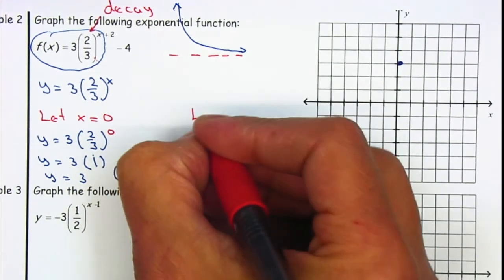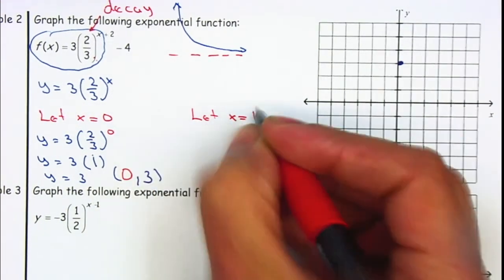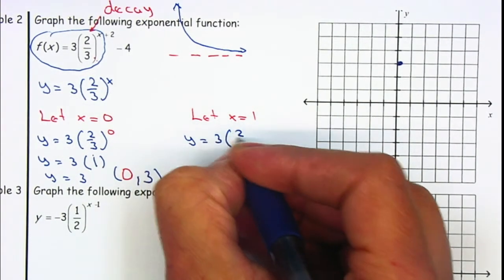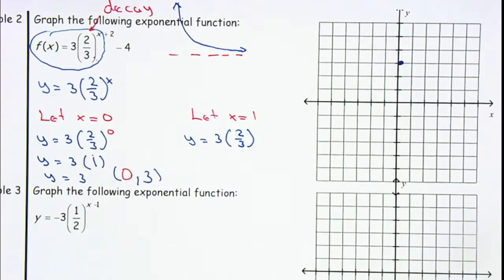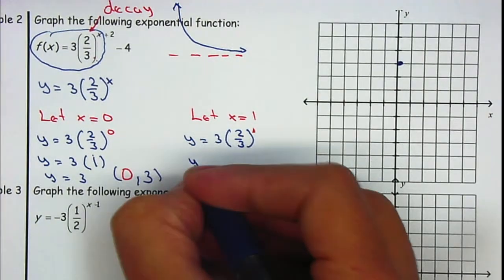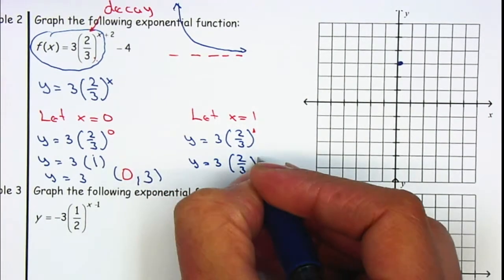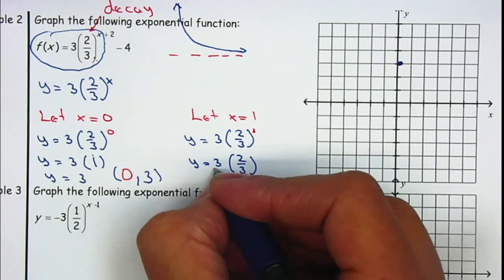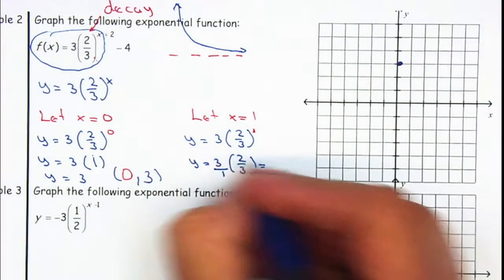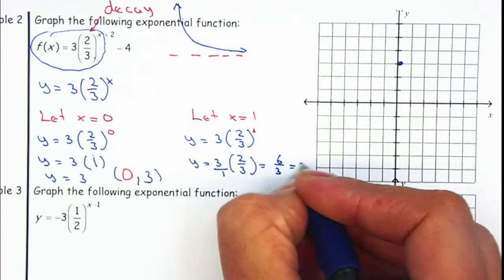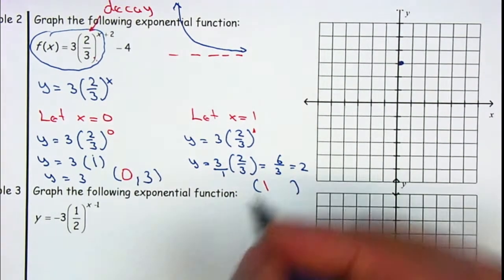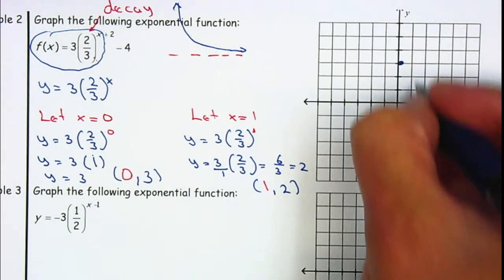For the next point, I'm going to let x equal to one. It will be y is equal to three times two-thirds to the one power. Two-thirds to the one power is just two-thirds, so three times two over three to the one. I'm going to place over one and multiply across, so it gives me six over three, which is equal to two. So my next point: if x is one, y is two.